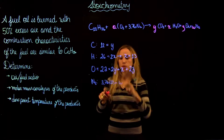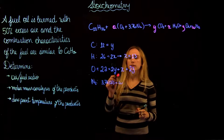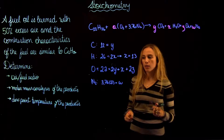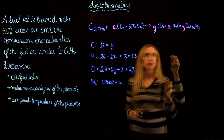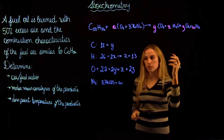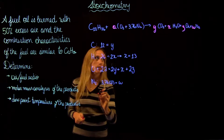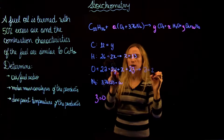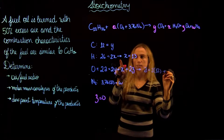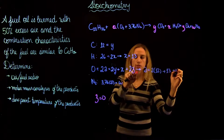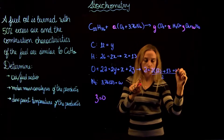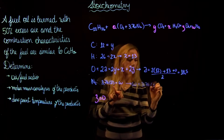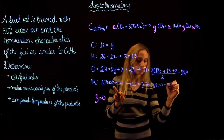We have four equations and five unknowns, so we can't solve it directly. For the theoretical air analysis, we assume excess oxygen Z equals zero. With that, A equals (2Y plus X) divided by 2, which is (2×12 plus 13) divided by 2, giving A equals 18.5. And W equals 3.76 times 18.5, which equals 69.56. So now we've found the combustion reaction using theoretical air.